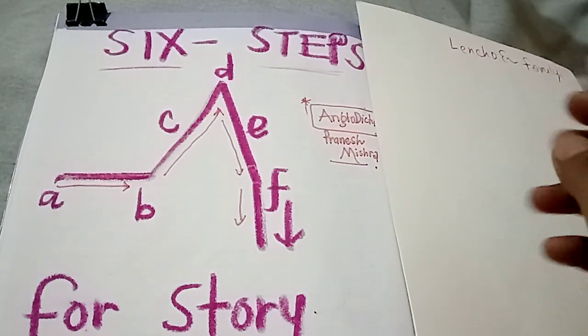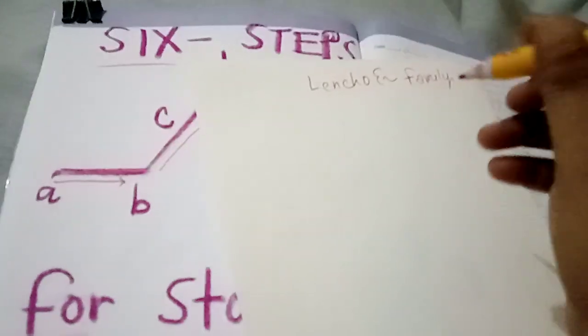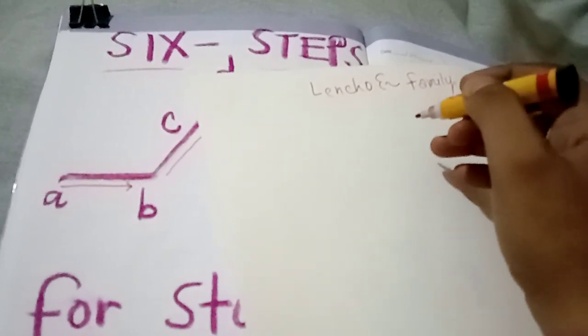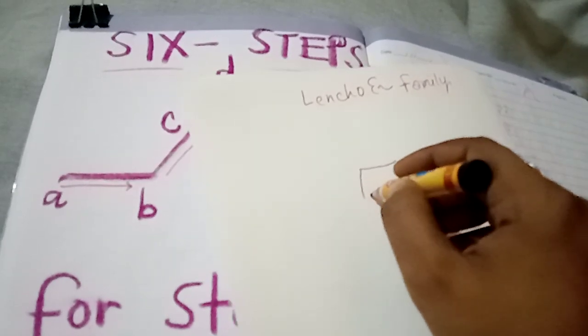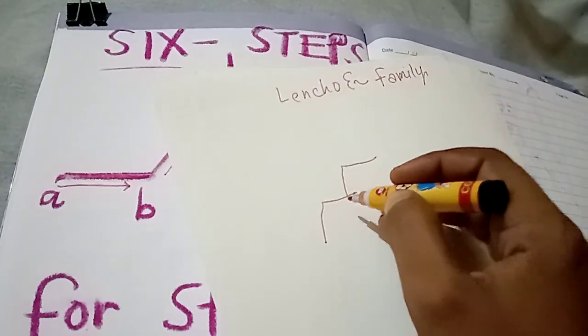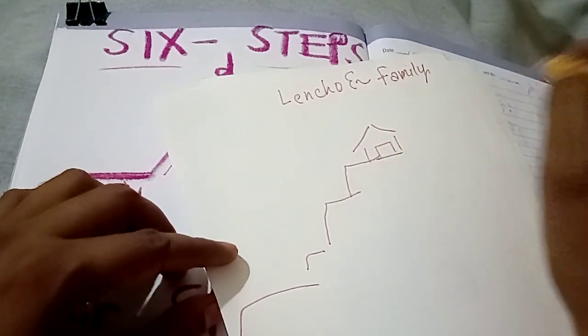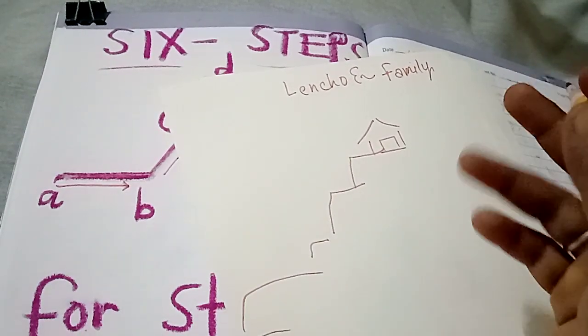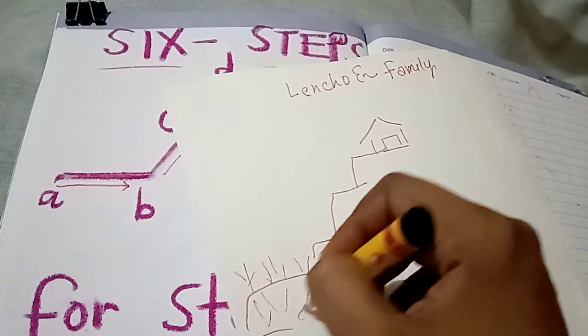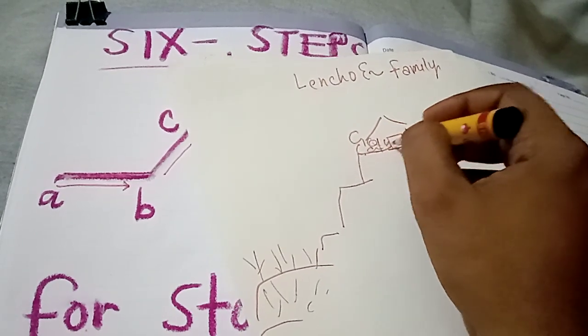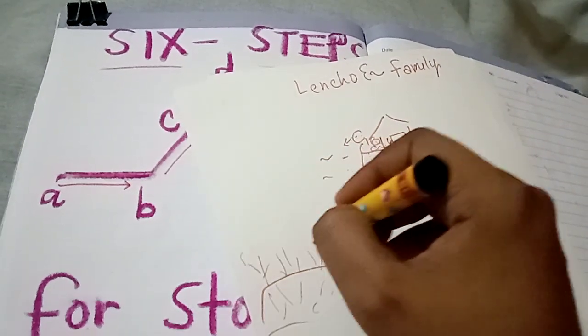First of all, we need to know what happened in the story. So, before we start, Lencho, when you will go through this story, a letter to God, then you will see some facts like Lencho, where is Lencho living? Lencho is living on a hill.